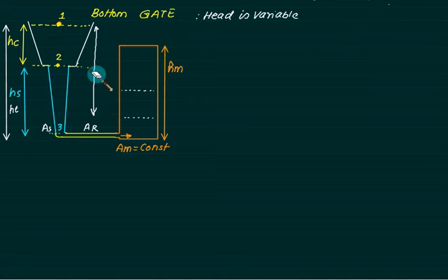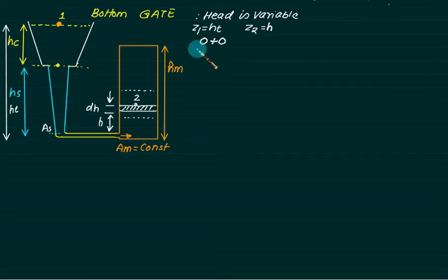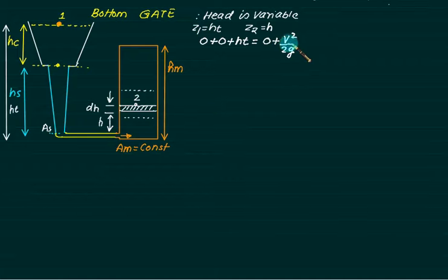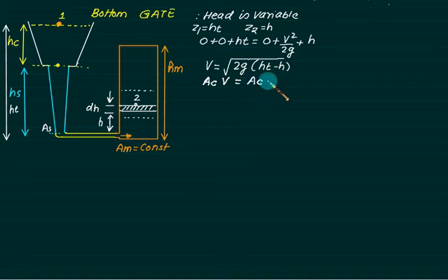We will measure the h value from the bottom side. If this level is h, then Z2 equals h. Applying the Bernoulli equation between points 1 and 2: P1 = 0, V1 = 0, Z1 = ht, P2 = 0. So velocity at any instant equals under root of 2g(ht − h). The discharge at this instant is AC × √(2g(ht − h)).